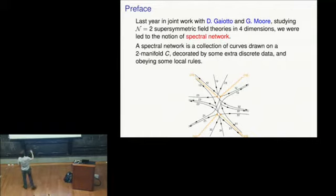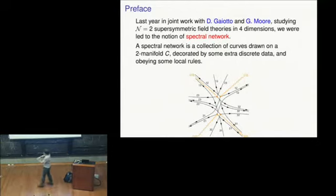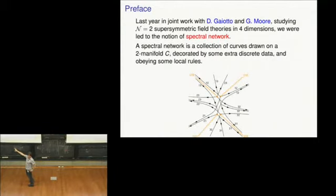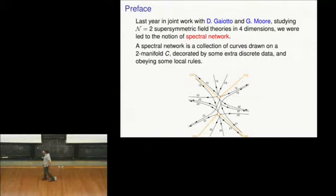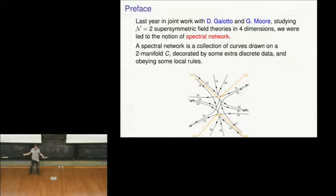What is a spectral network? I'll describe how they're constructed in a couple of slides, but just to get some vague idea of what kind of object we're talking about: we're going to have a two-manifold C, which we often think of as a Riemann surface, and we're going to draw a bunch of paths on that Riemann surface. Here's a picture of a patch of a Riemann surface with some complicated network of paths drawn on it, as well as some branch cuts representing the branching of a finite cover of the Riemann surface — in this case, a three-to-one cover. The paths will be decorated by some discrete data, these numbers, which are labeling the sheets of this covering.